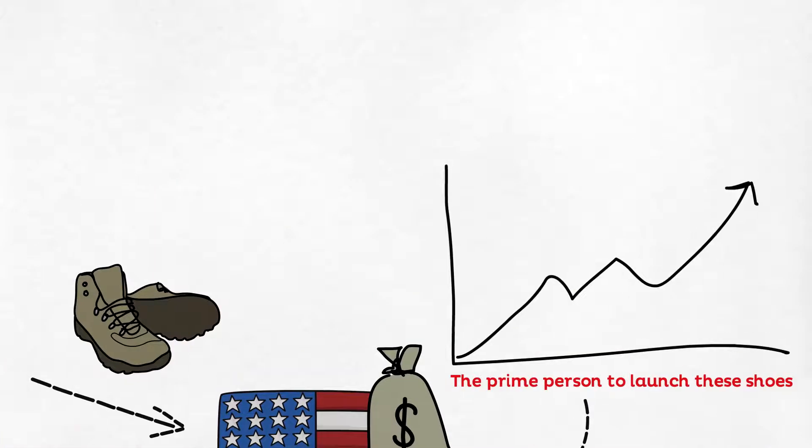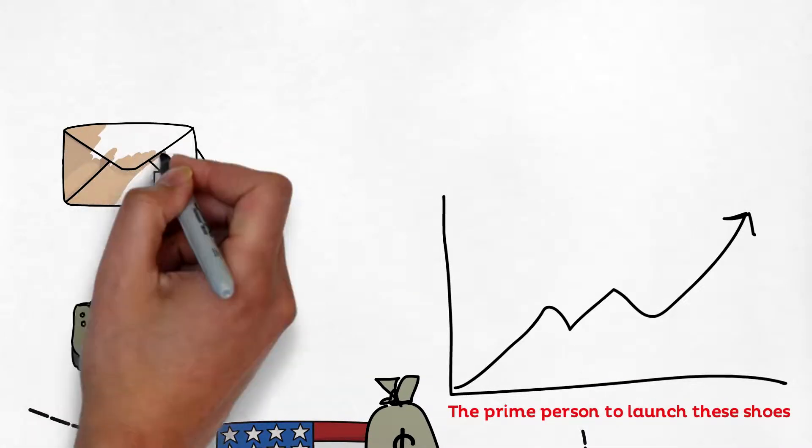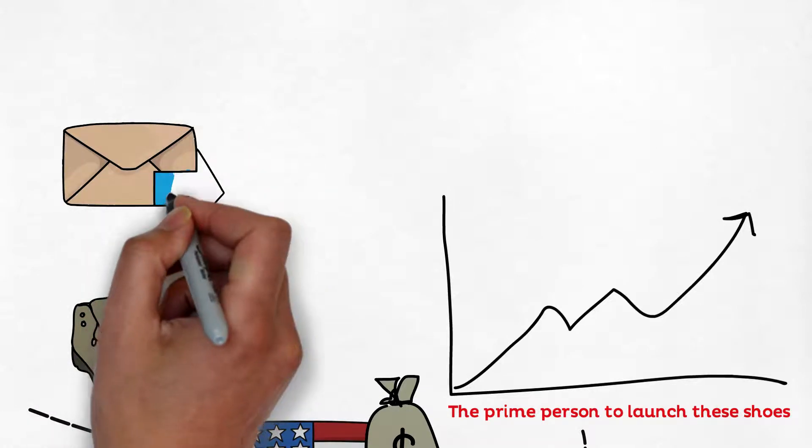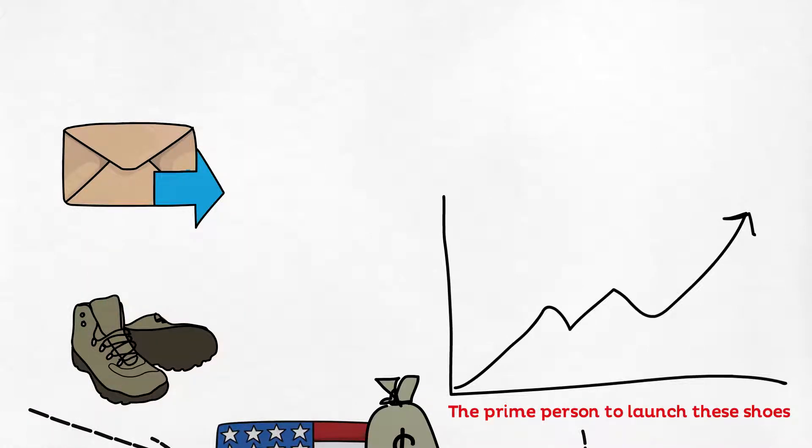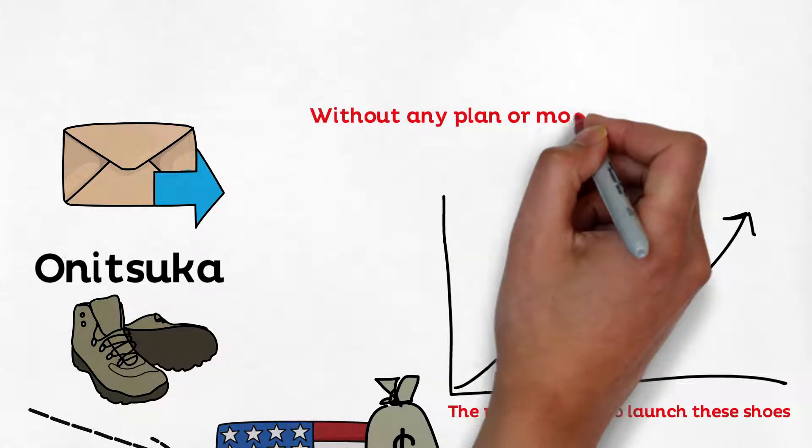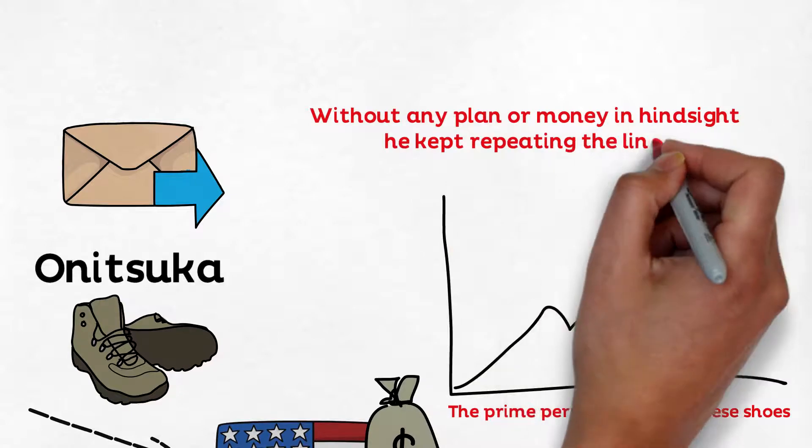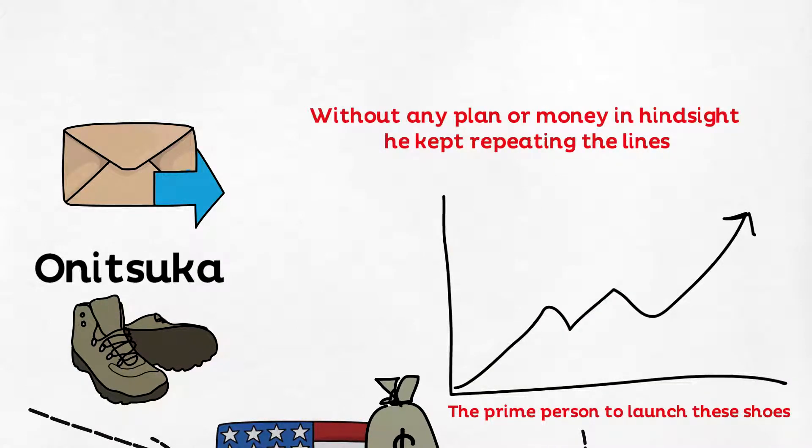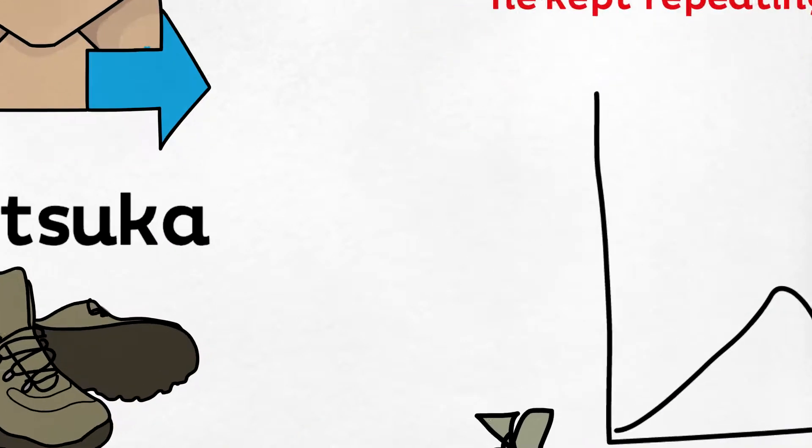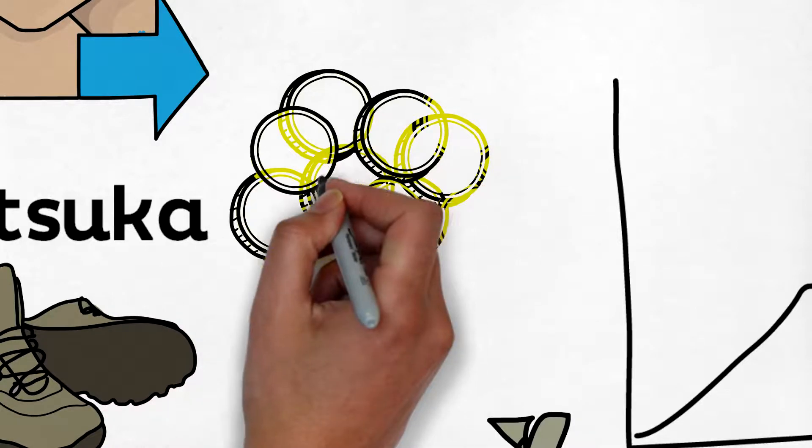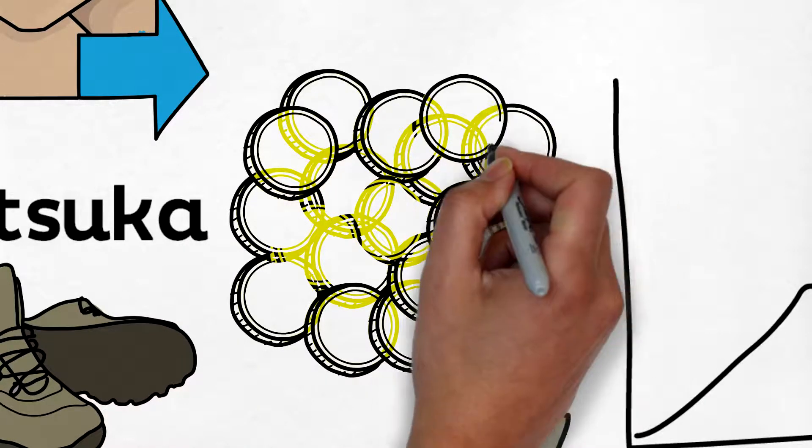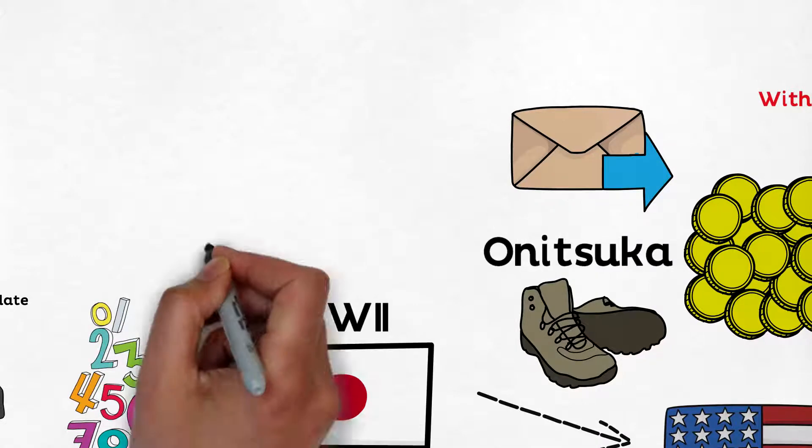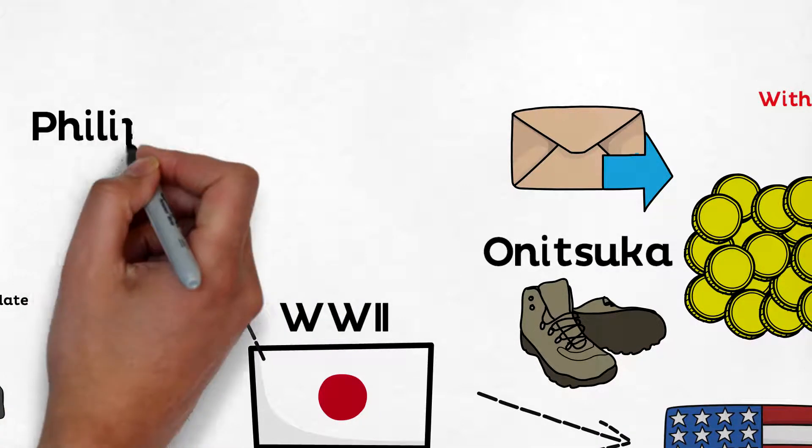After the meeting, he hurried back to his hotel and sent his dad a wire transfer request. He needed money to purchase samples from Onitsuka. Without any plan or money in hindsight, he kept repeating the lines of Confucius: the man who moves the mountain begins by carrying away small stones. He got some money from his dad and placed his first sample order.